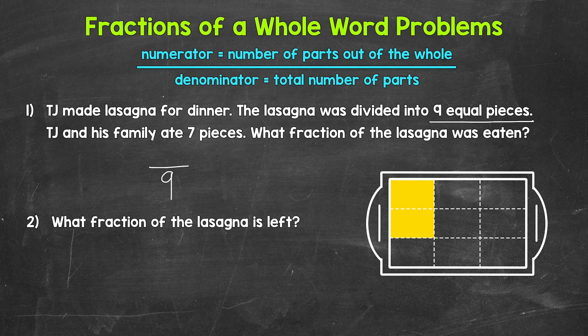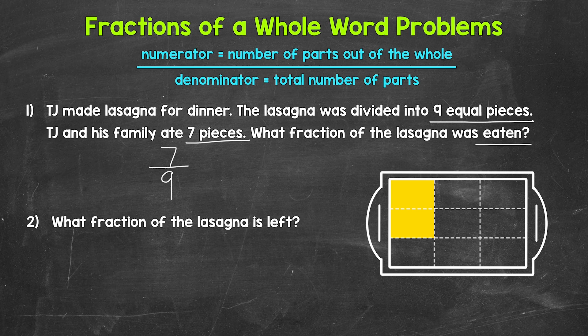Now we need the numerator — that's the number of parts out of the whole that we are interested in or focused on. We can think of the numerator as the number of parts being talked about. Here we want the fraction of the lasagna that was eaten, so we need the number of pieces TJ and his family ate. That's seven. Seven is our numerator. Seven pieces out of the nine total pieces were eaten. So our fraction here is seven ninths. Seven ninths of the lasagna was eaten.